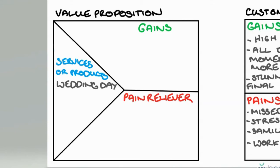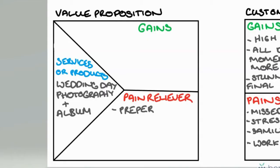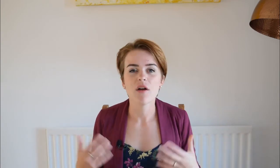Now we move on to the value map — how I can provide value in that situation. The product or service I'm giving is their wedding photography and their album. For pain relievers, these are the things I provide that stop them experiencing those problems. That includes preparation: I'll meet with them and figure out all the shots they want, and coach them on little things like making sure they go for a long kiss at the altar so I don't miss that first kiss moment. I also have professional equipment and backups, so if something goes wrong with one piece of equipment, it won't cause problems on their day.